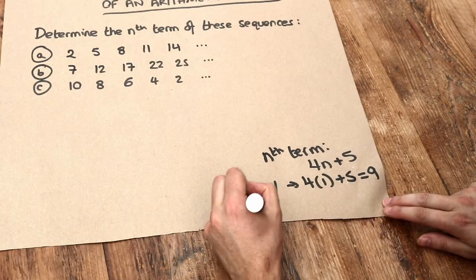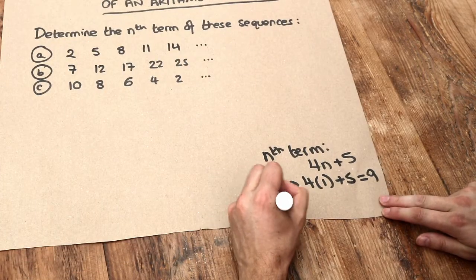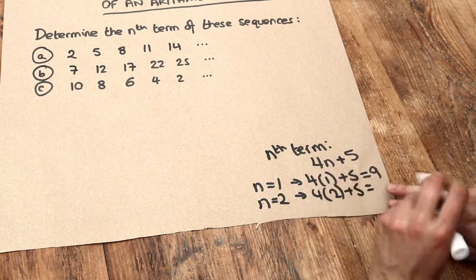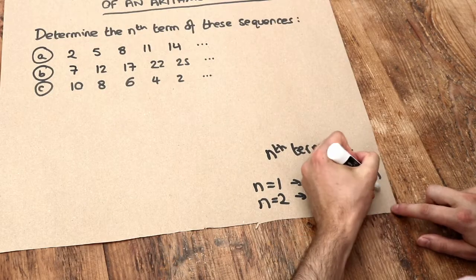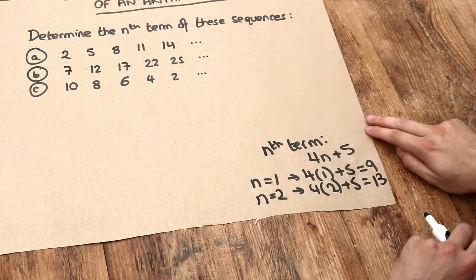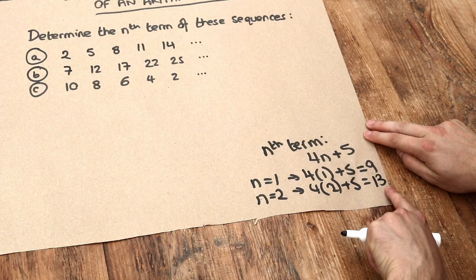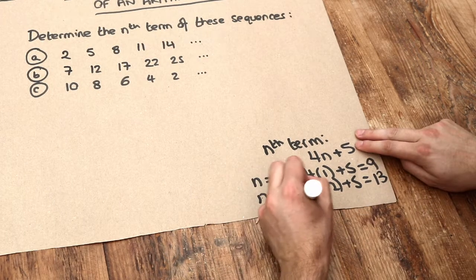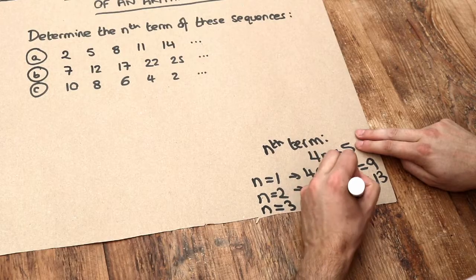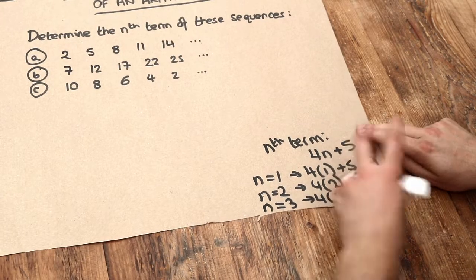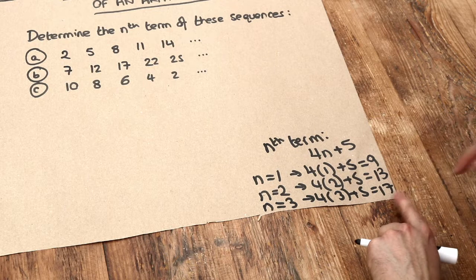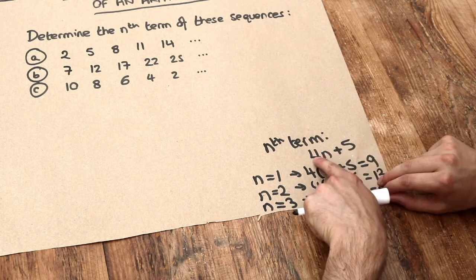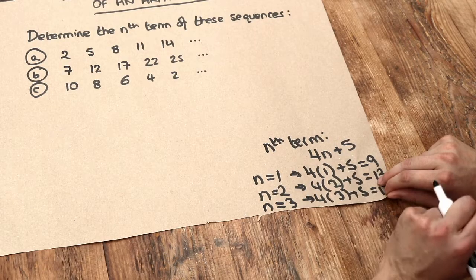If I wanted the second term, the position n is 2, so you do 4 times 2 plus 5 — that's 8 plus 5, which is 13. Notice that from the first term to the second term, it's going up by 4. And indeed the third term, 4 times 3 plus 5, would be 17 — so it's going up by 4 each time. Whatever the sequence goes up by tells you the number in front of the n in the formula.